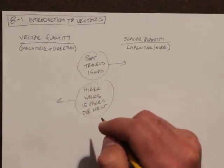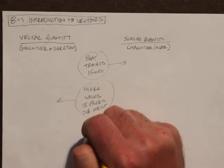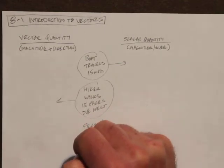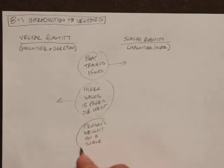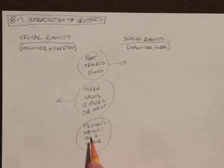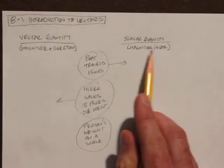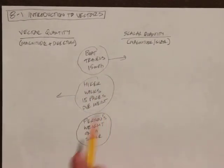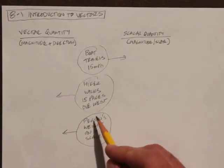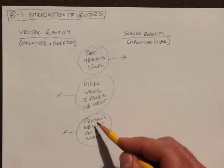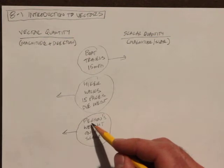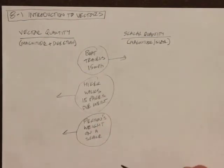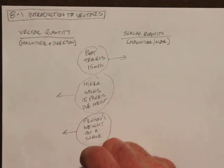A person's weight on a scale — you step on a scale. Would this be a scalar quantity or a vector quantity? This would actually be a vector quantity because we have the direction, which is down onto the scale, and we have the person's weight and the distance that the scale compresses. So this is a vector quantity.